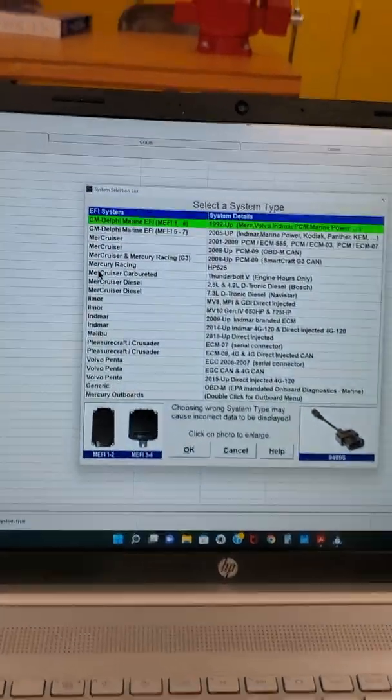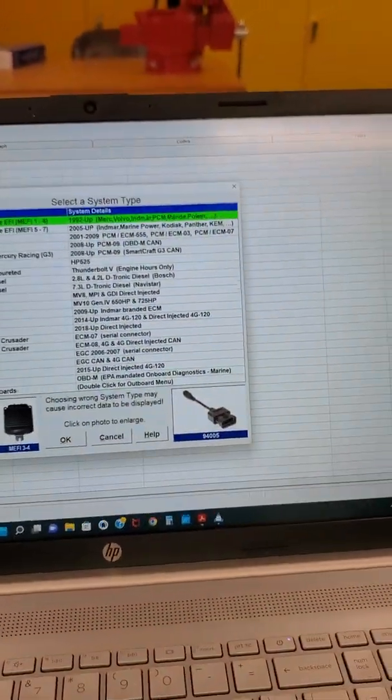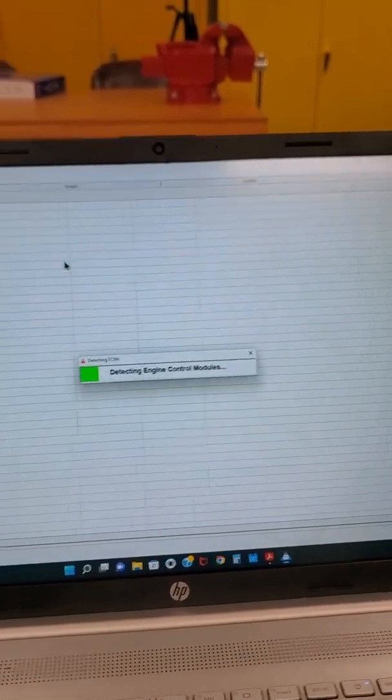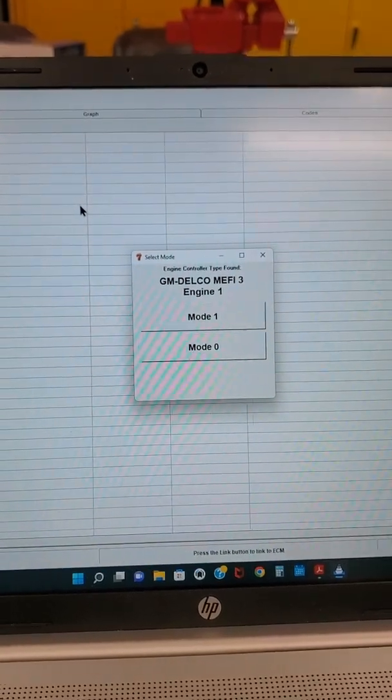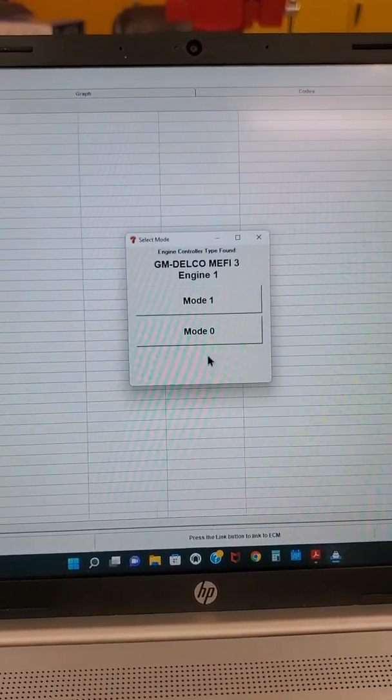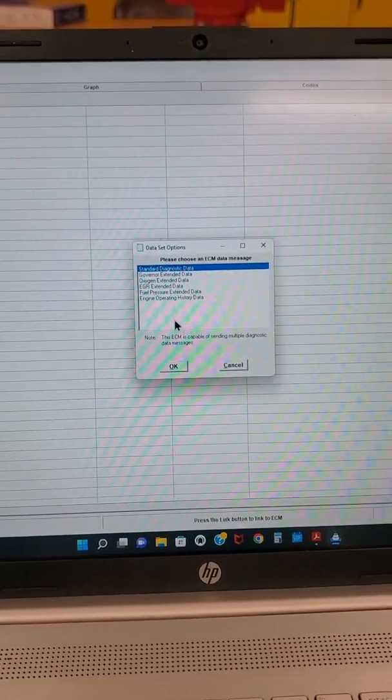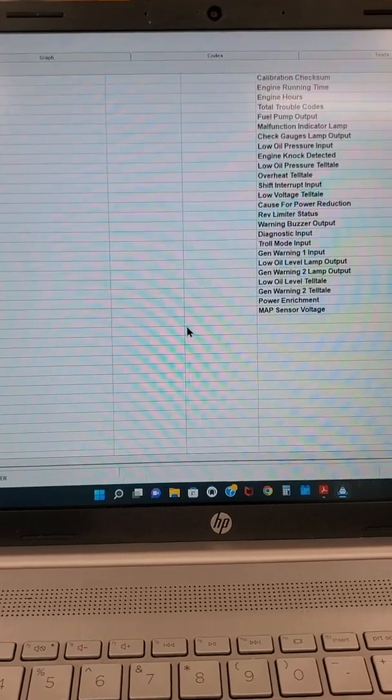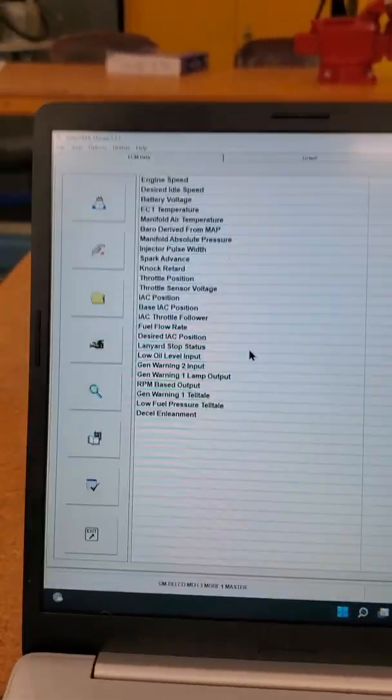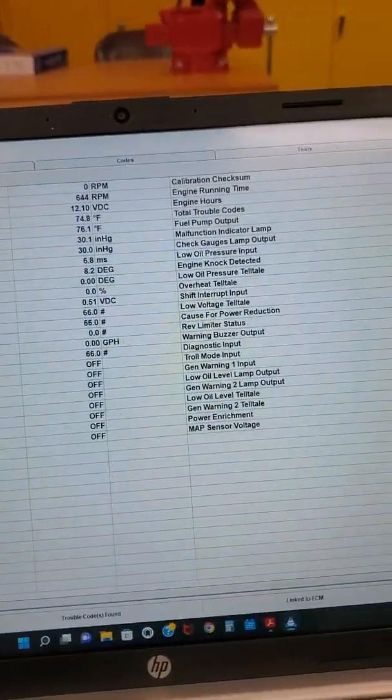With its original processor in it, you just got to pick MEFI 1 through 4, select that. And if it can communicate with the ECM with a key on, you get this screen. And node 1 is just the standard, which gives you all the data. And then I can just pick the standard diagnostic data, click OK. And then if I communicate with the engine, then I'll get live data.